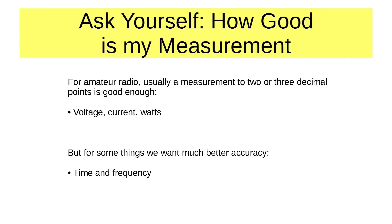In ham radio, you need, when you take a measurement, to ask how good is your measurement. For amateur radio, usually a measurement of two or three decimal points is good enough, like 13.8 volts. You don't need to know whether it's 13.8125. Just 13.8 is fine. Current, maybe it's within an amp is all you need. Watts and so on. You don't need much. For some things, we do want much better accuracy in ham radio, and that is time and frequency. Because you want your display, especially on the new modern radios, which read out to the nearest hertz, you want them to be accurate.